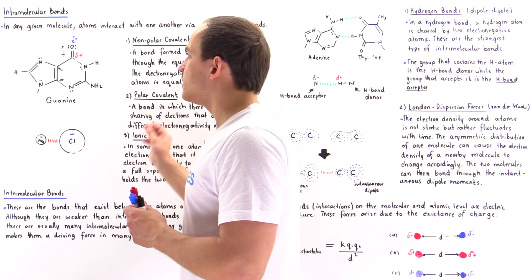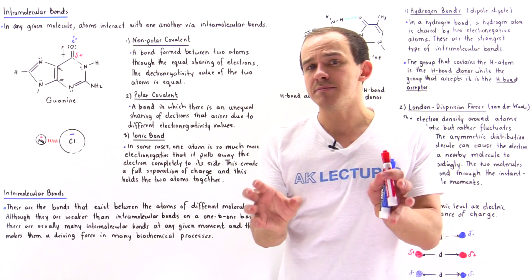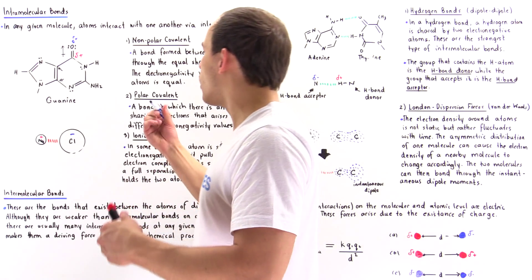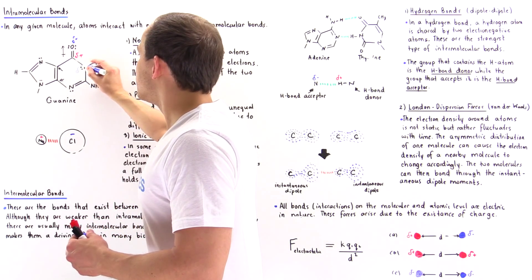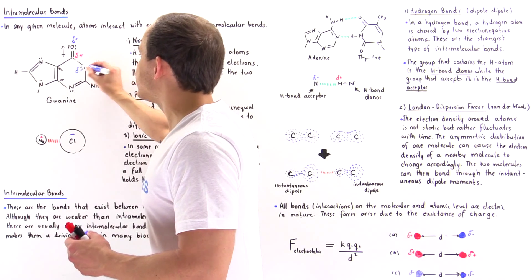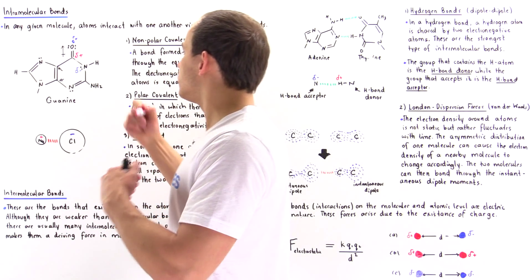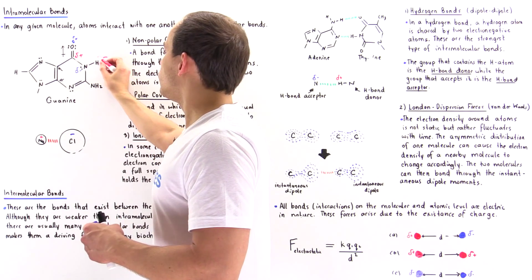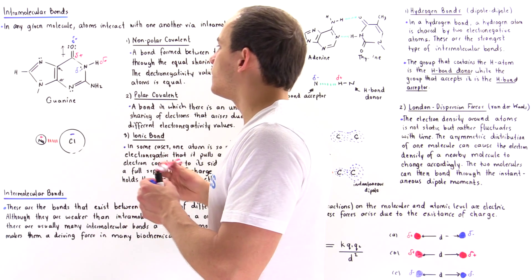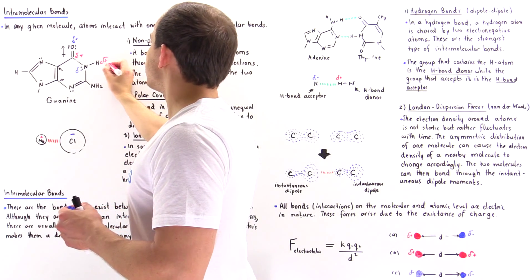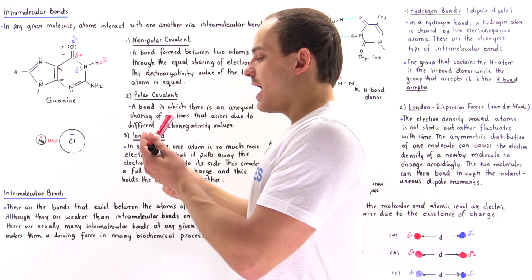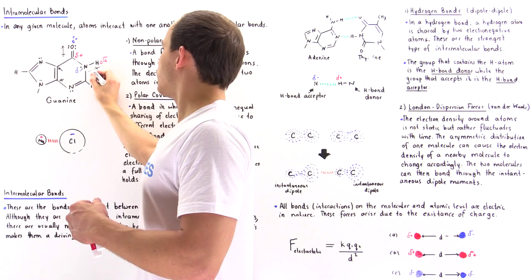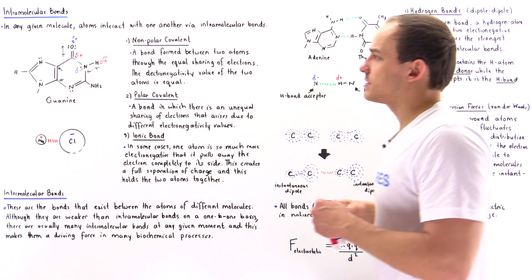A polar covalent bond is a bond that exists between two different atoms that have two different electronegativity values. Another polar bond is the nitrogen-hydrogen bond: nitrogen is more electronegative than hydrogen, so it will pull the electron density closer, developing a partial negative charge, while the H will develop a partial positive charge. This is another example of an electric dipole moment — a polar covalent bond — and the electric dipole moment points in that direction.